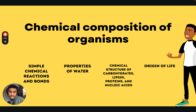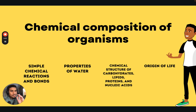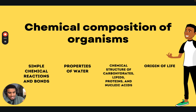Then nucleic acids. What is a nucleic acid? Nucleic acids include DNA — deoxyribonucleic acid — and RNA — ribonucleic acid. You need to understand the difference between the two, what they do, and the chemical structure of the nucleotide.